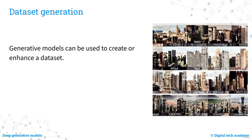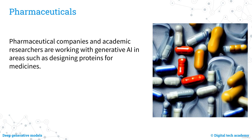Generative AI can be used to create synthetic datasets for training machine learning models, useful for augmenting existing datasets, testing models, or training in cases where real-world data is not available. Generative models can create synthetic datasets similar in structure and content to real-world datasets, allowing models to be trained on representative data — particularly useful when collecting real-world data is time-consuming or expensive. AI is also being used in pharmaceutical and academic research to design proteins for medicine, helping predict protein folding, which has been a long-standing challenge in genetics and pharmaceutical development.